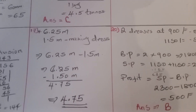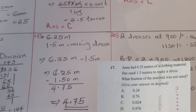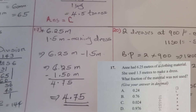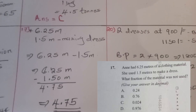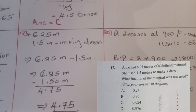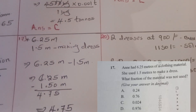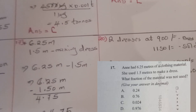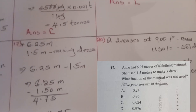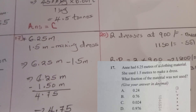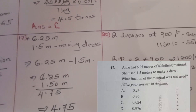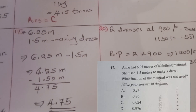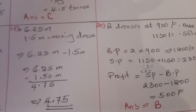Question seventeen: Una had 6.25 meters of clothing material and used 1.5 meters to make a dress. What fraction of the material was not used — give your answer as a decimal. We subtract 1.5 from 6.25, which gives 4.75. So 4.75 meters of material was not used. If you are watching and feel there is another method that should be used, please let us know in the comments.